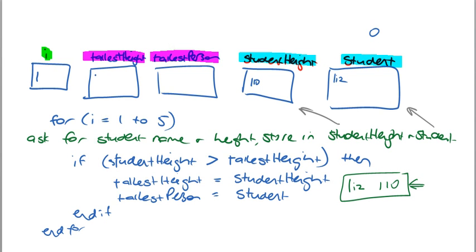So now I can put into tallest height the student height, which is 110. I can see that it's 110. Then my tallest person so far — there's nothing in here, it's just a string value of null — first time through, there's nothing. So right now I'm going to say that the tallest person so far is the student. I'm going to put in Liz. Then I come through here, I've gone through all that, so I can come out of my loop and come back up.